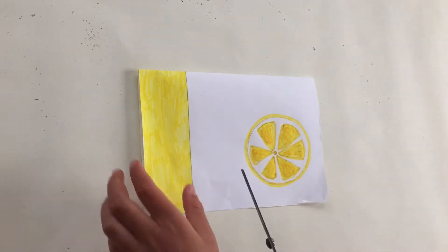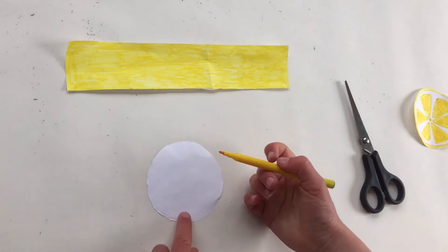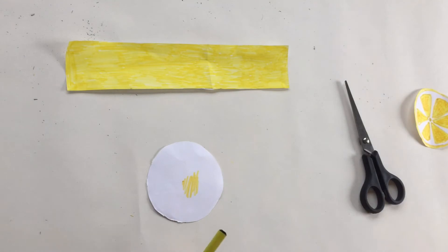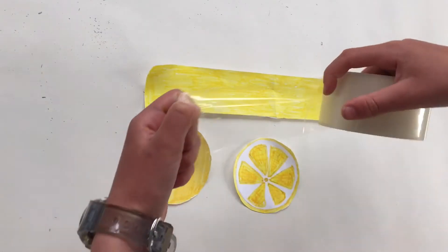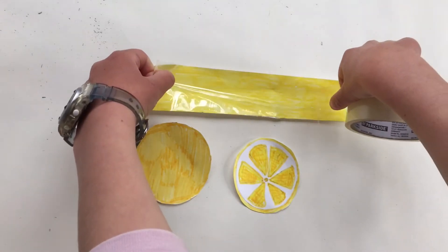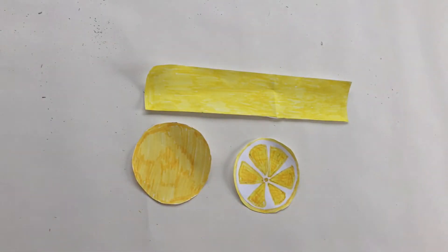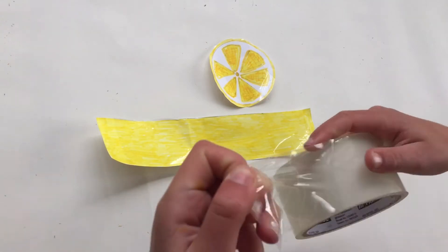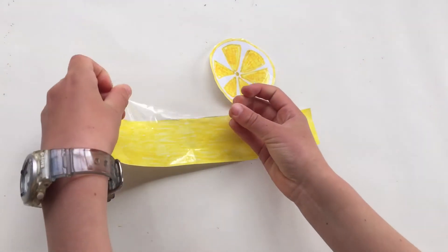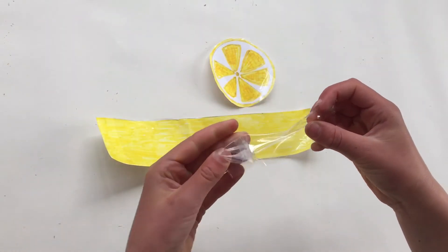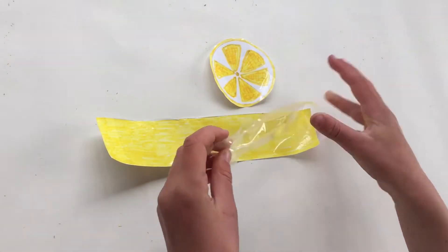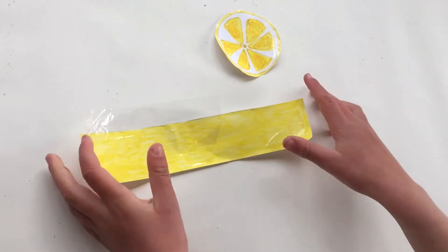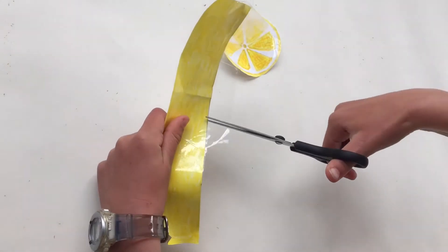After you've done that, cut it all out. Next you need to get the circle. Now take the front and just get some sellotape. Get the front of the lemon and then the straight line and put the sellotape on the top of the straight line, and then cut it into little segments, but don't cut the straight line, just cut the sellotape like this.